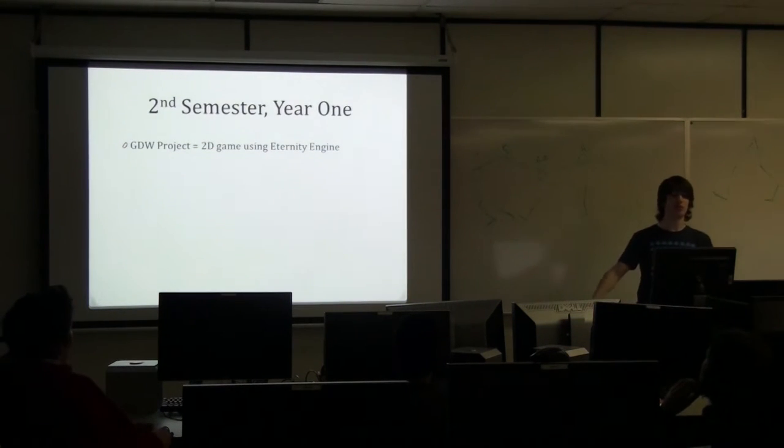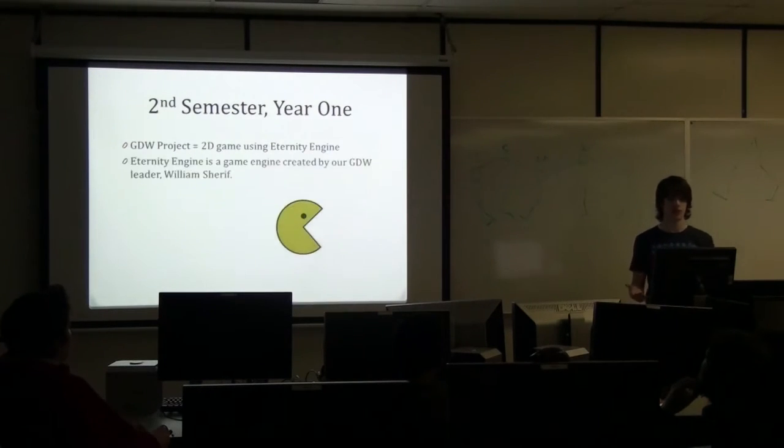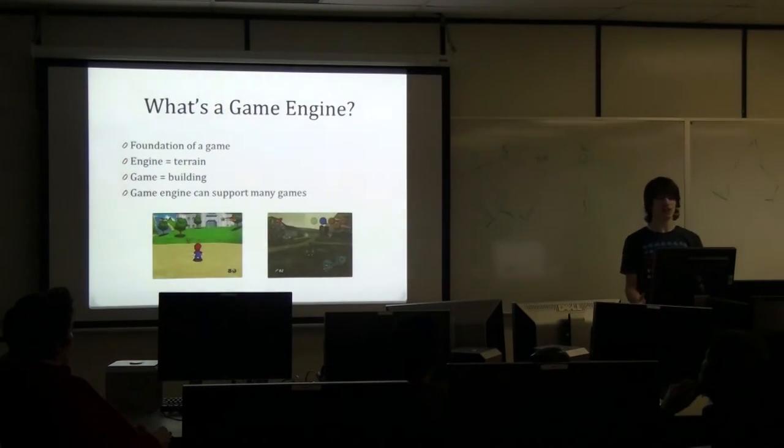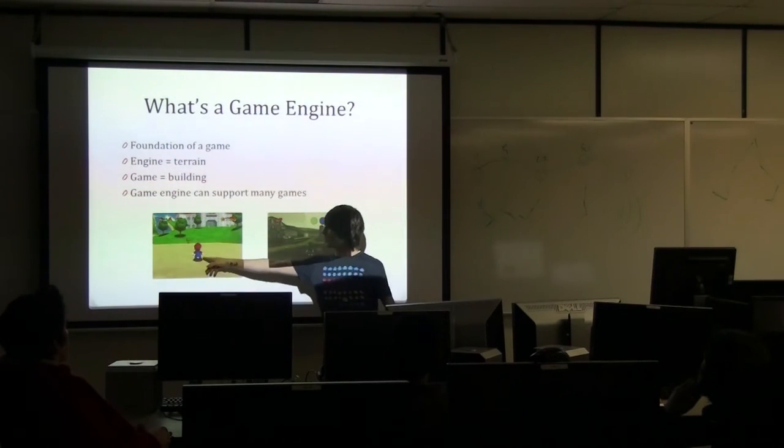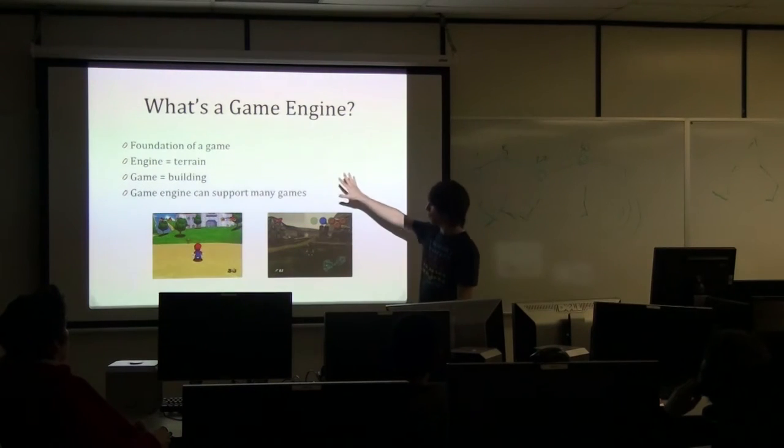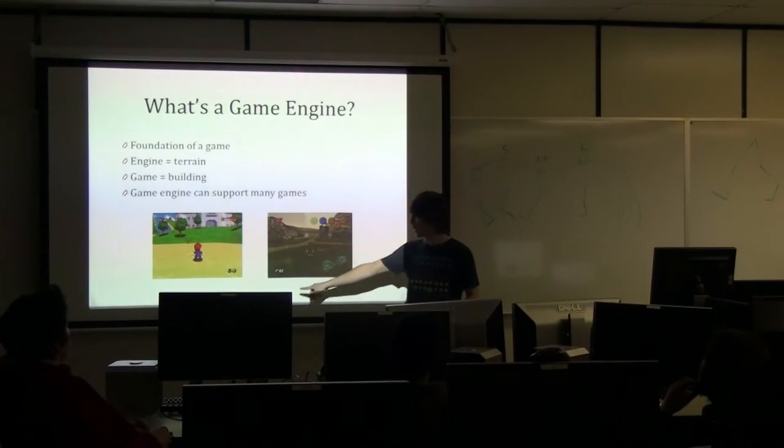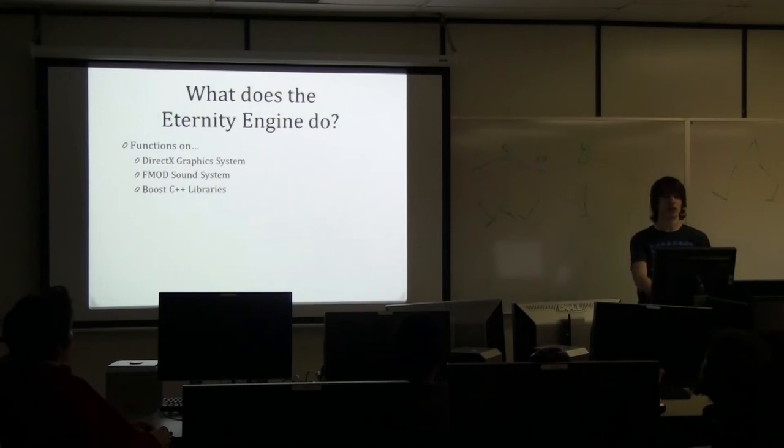Second semester of year one. GDW project, 2D game, using something called the Eternity Engine. And it was a game engine created by William Sheriff, our GDW leader, and it allowed us to make 2D games very easily. So, you might wonder, what is inside a game engine? What makes a game engine? Well, basically, it's the foundation of a game. So, think of the engine as like a terrain, and the game as a building. So, a game engine can support many games. Like, for example, Mario, Super Mario 64, and Legend of Zelda Ocarina of Time. You can see right here that they look relatively the same. They were made by the same foundation, and then after they just built different art assets on top of it.